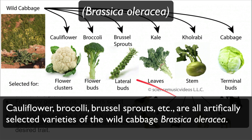The plants in the Brassica oleracea family include cauliflower, broccoli, Brussels sprouts, etc. — they're all the same species. The ancestral plant, Brassica oleracea, has been bred for specific traits: flower clusters for cauliflower, flower buds for broccoli, lateral buds for Brussels sprouts, and leaves for kale. All of these are varieties of the same species bred for specific traits.